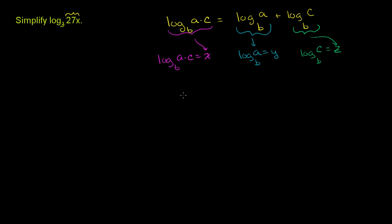Now, what we know is this thing right over here tells us that b to the x power is equal to a times c. Now, this right over here is telling us that b to the y power is equal to a. And this over here is telling us that b to the z power is equal to c.